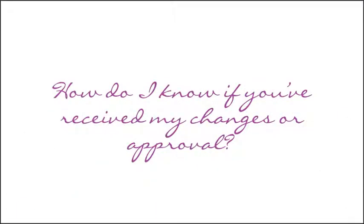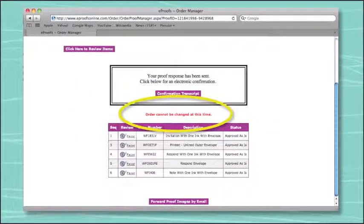Unsure if we've received your updates? After you've responded to all items on the proof and saved your responses for each, you will receive a message saying "Order cannot be changed at this time." This means that we have received your changes or approval.